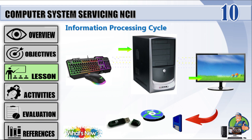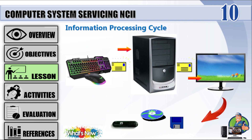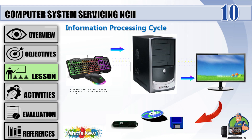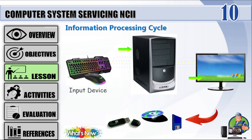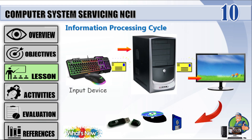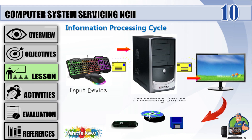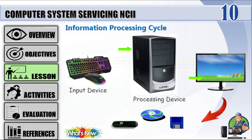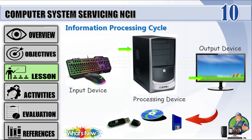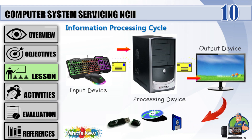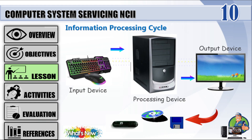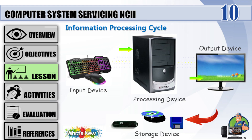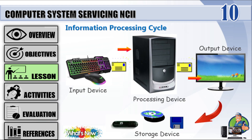Information Processing Cycle — Input, Processing, Output, and Storage. An Input Device is any hardware device that sends data to a computer, allowing you to interact with and control it. A Processing Device is any device inside a computer that interprets and manipulates incoming data. An Output Device is any hardware device used to send data from a computer to another device or user. A Storage Device is any type of computing hardware used for storing, porting, or extracting data files and objects.